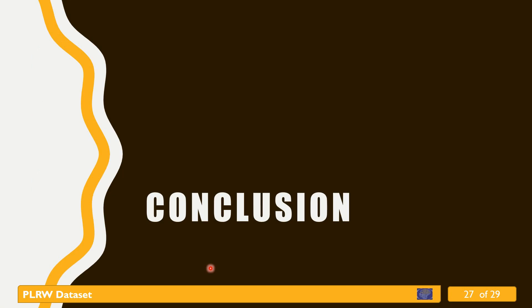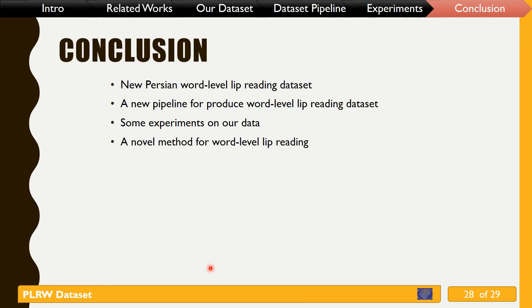In conclusion, in this paper we presented a dataset for Persian word-level lip reading. This large dataset is suitable for deep learning-based methods. We tested the dataset with the best model of word-level lip reading on the LRW benchmark. We also proposed a novel method for word-level lip reading, and based on the results this model outperforms the previous method. Interestingly, the feature extractor model was trained only on English datasets. Thank you.